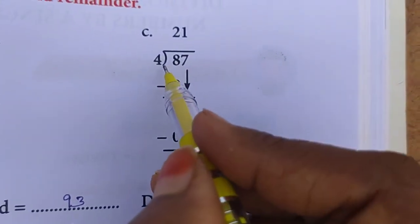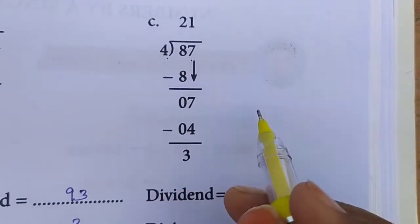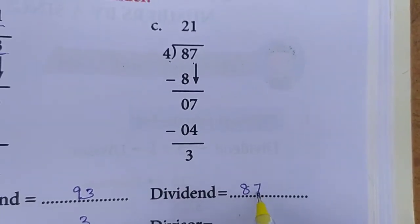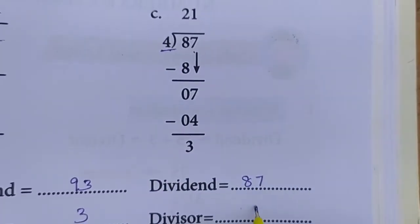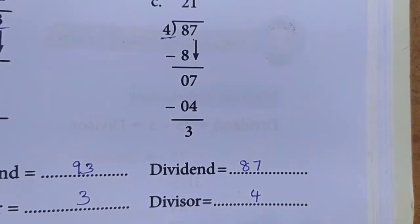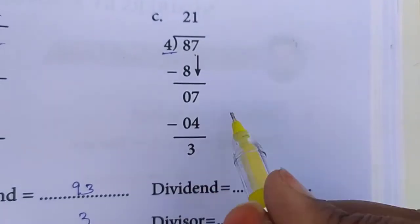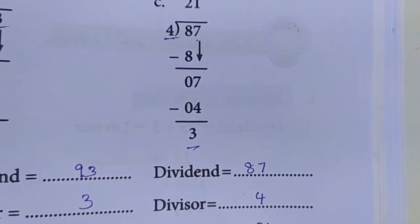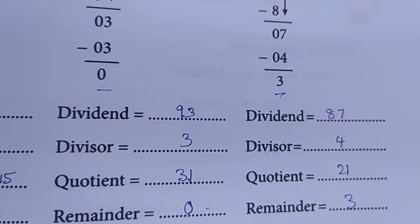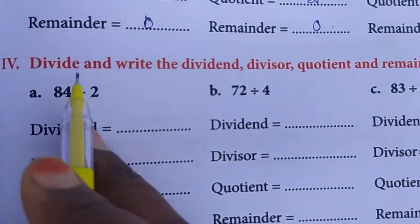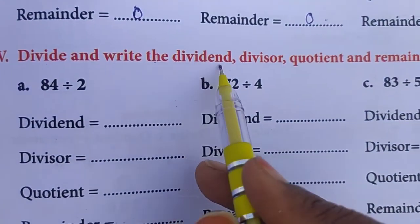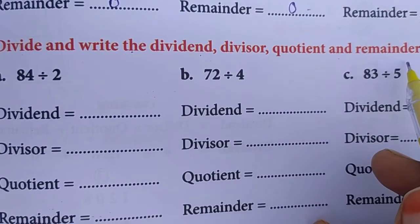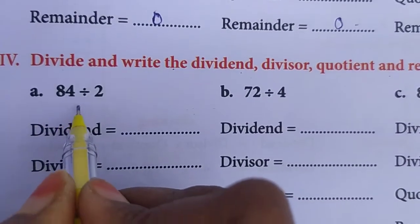Here, 87 is the dividend, 4 is the divisor, quotient is 21, and remainder is 3. In the next bit, divide and write the dividend, divisor, quotient and remainder. So you have to do the division.